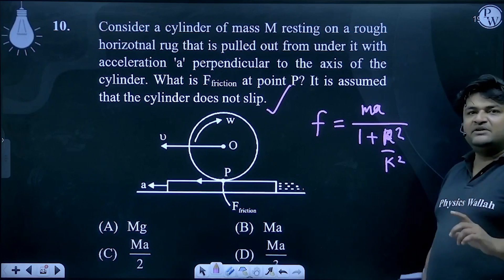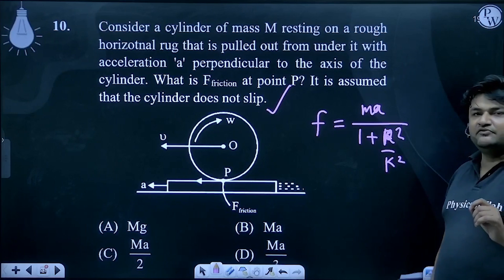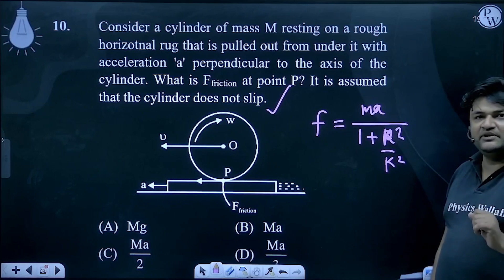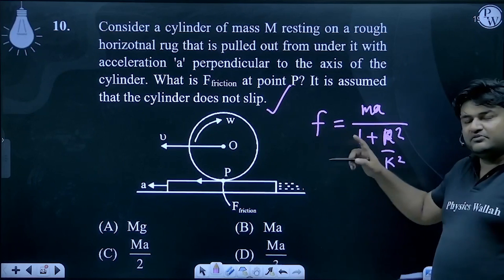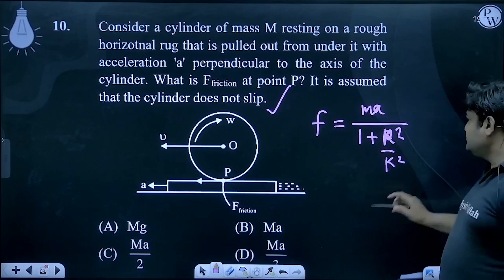Cylinder is M A F by 1 plus R square is 2 plus R square is by 1 plus R square.